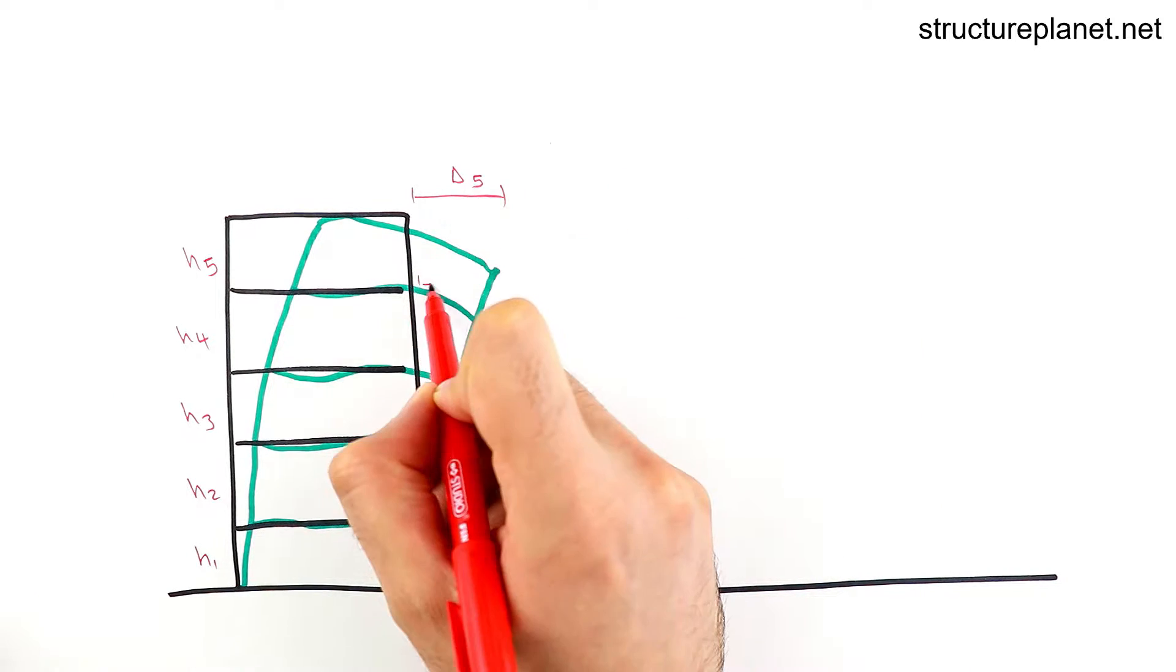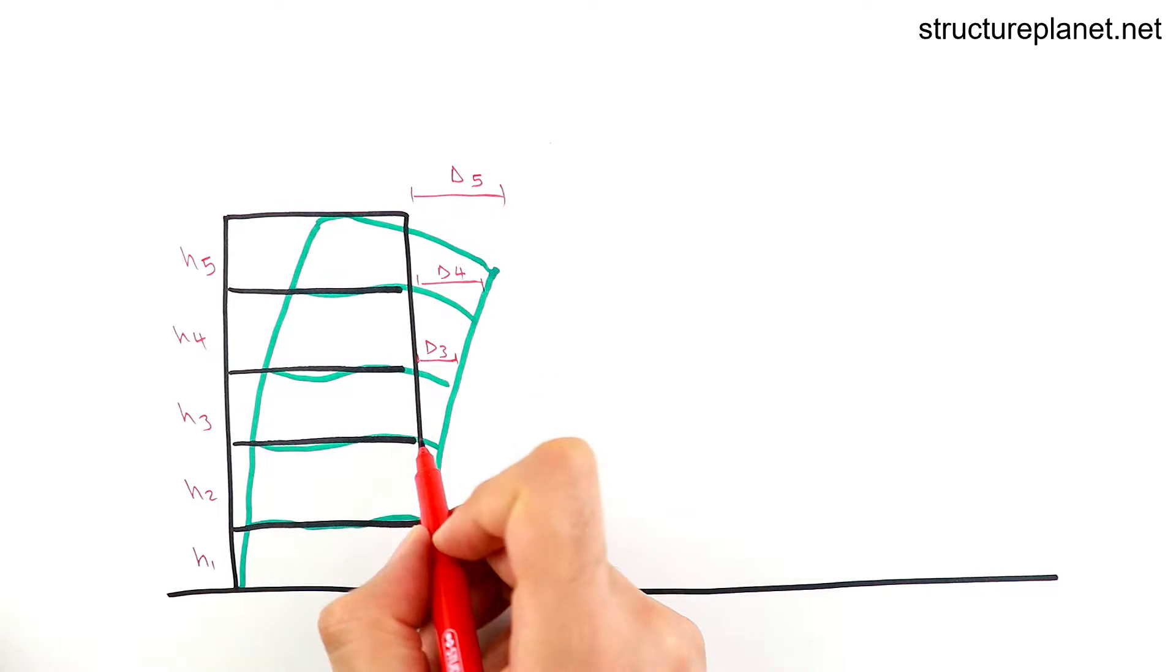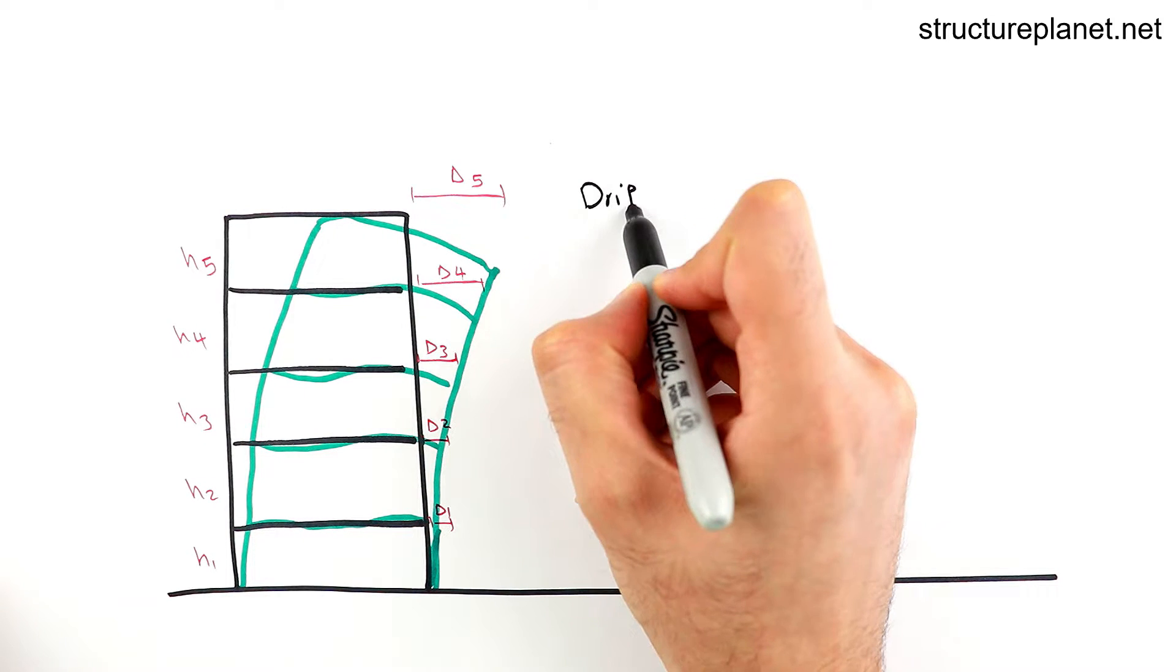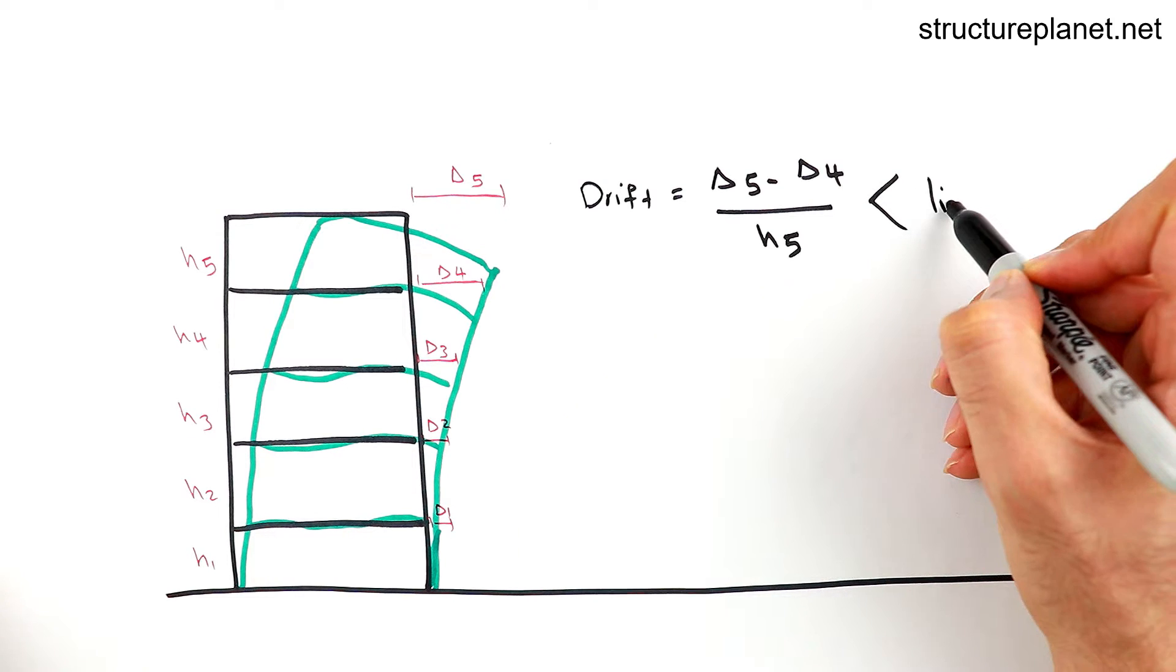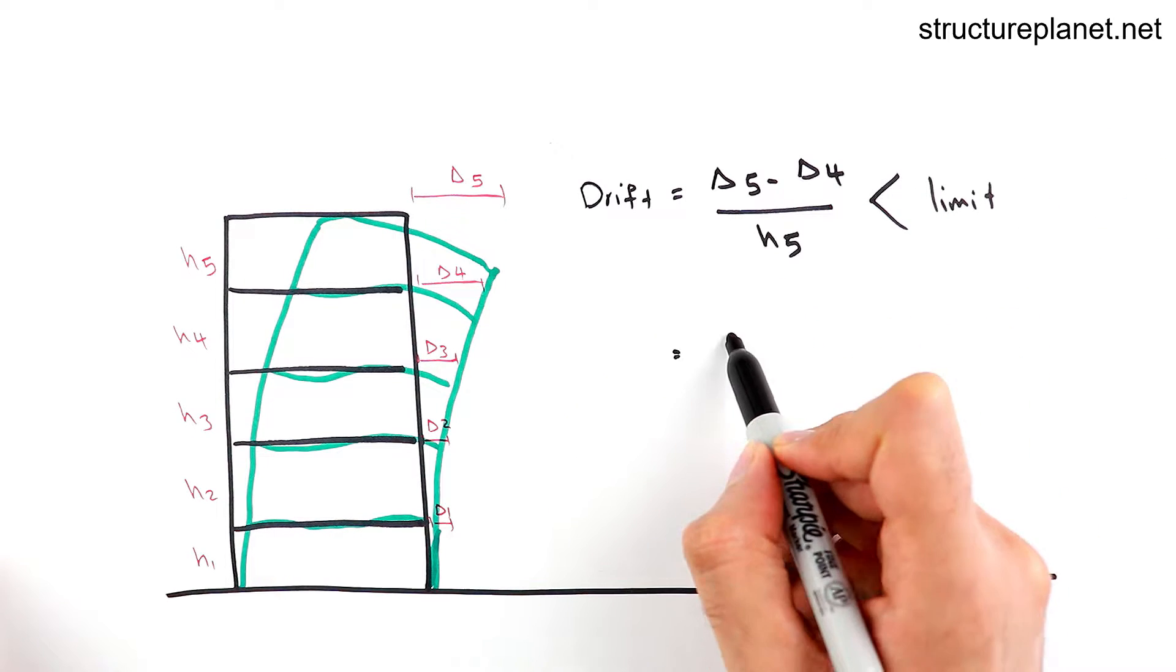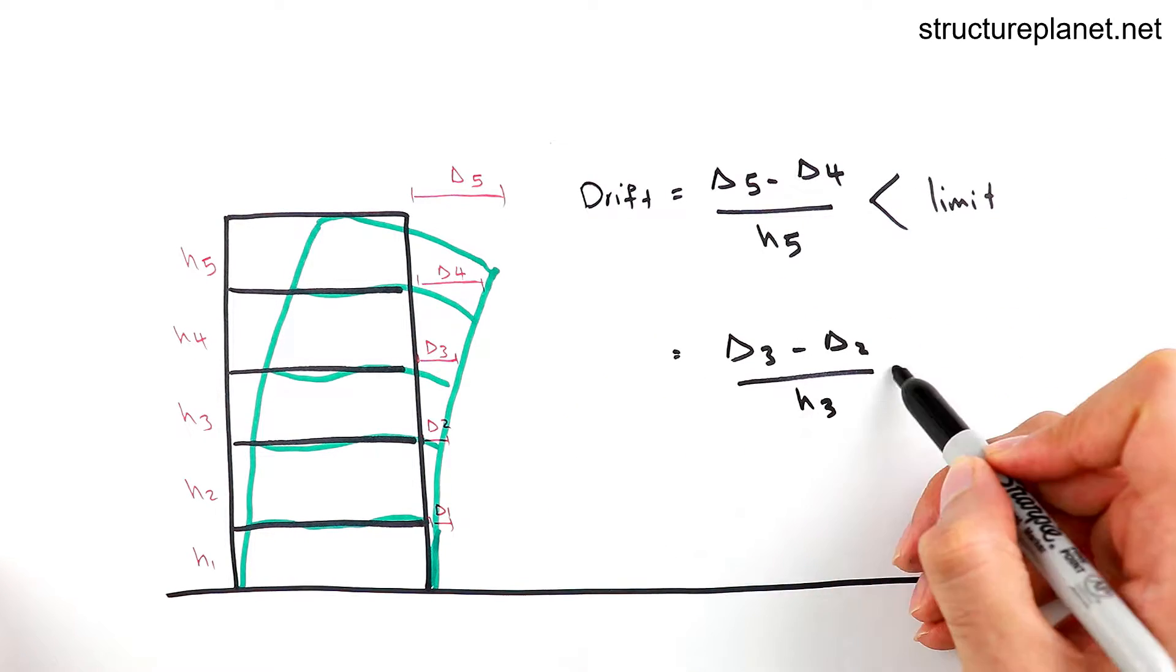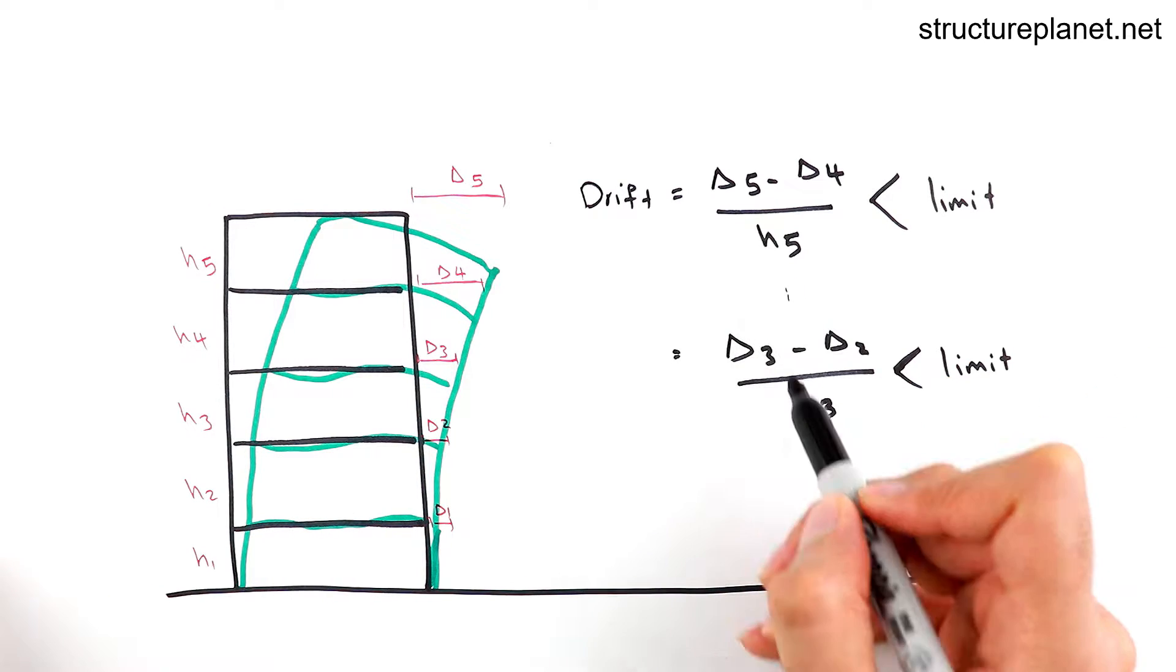So that non-structural elements such as claddings, partitions and other components do not experience a high deformation which can cause them to crack or break apart. If deformations are found to be high, sizing up the lateral force resisting members or adding additional lateral elements will help.